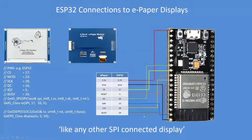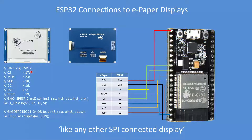To begin with, these are the connections required. This first example is the ESP32 using a 4.2-inch e-paper display. On the display itself, the connections are available through the connector on both sides, so you can solder pins. These are the pins I've chosen for the ESP32. Chip select is pin 17, so wire chip select over to pin 17.